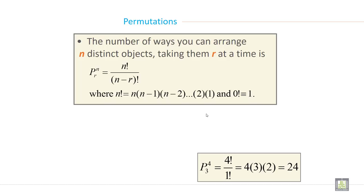The number of ways you can arrange n distinct objects taking them r at a time is Prn equals n factorial divided by n minus r factorial. This sign is called factorial where n factorial is n into n minus 1, n minus 2, into 2 into 1, and 0 factorial always equals 1.